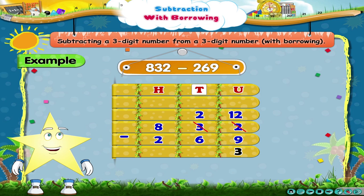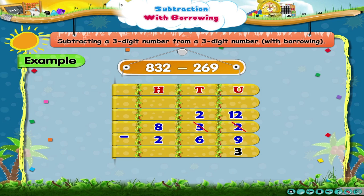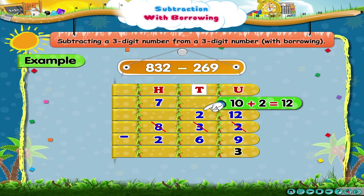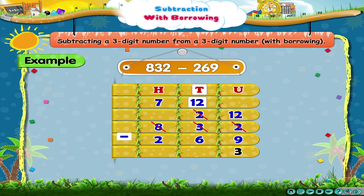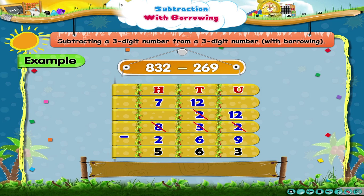Observe the tens place, Starry. It has 2 tens, which is less than 6 tens. So, we borrow 10s from the hundreds place. The hundreds place has 8. When we borrow 10s, the hundreds place becomes 7. And the tens place becomes 10 plus 2 equals 12. So, 12 tens minus 6 tens equals 6. And 7 hundreds minus 2 hundreds equals 5 hundreds. So, the difference is 563.